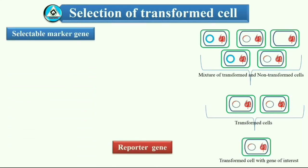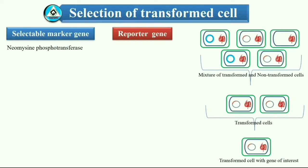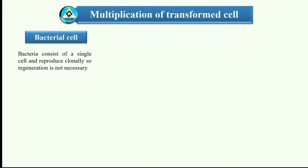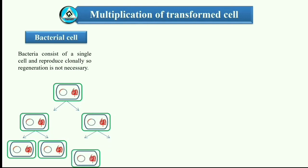Selectable marker genes are present on the vector into which the DNA of interest has been cloned. These genes protect the organism from a selective agent that would normally kill it. All cells that do not contain the foreign DNA are killed in the presence of the selective agent, and only the desired ones are left behind. Commonly used selectable marker genes are neomycin phosphotransferase, glyphosate oxidoreductase, thymidine kinase, etc. Reporter genes are an alternative to selectable marker genes, which help in distinguishing between wanted and unwanted cells. Examples of reporter genes are beta-galactosidase, chloramphenicol acetyltransferase, naphthalene synthase, etc. As only a single cell is transformed with genetic material, the organism must be regenerated from that single cell. Bacteria consist of a single cell and reproduce clonally, so regeneration is not necessary. In plants this is accomplished through the use of tissue culture. In animals it is necessary to ensure that the inserted DNA is present in the embryonic stem cells.